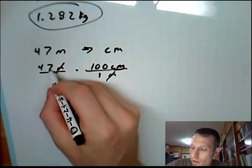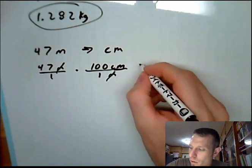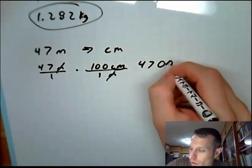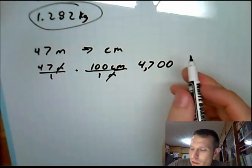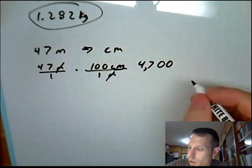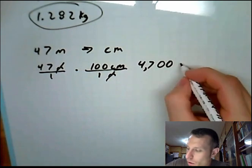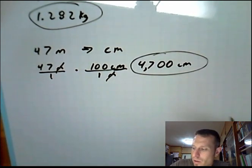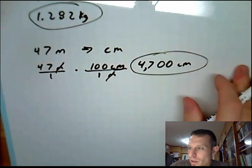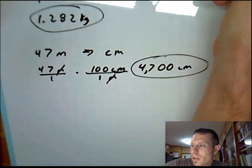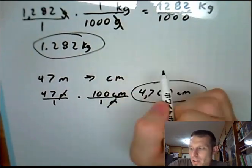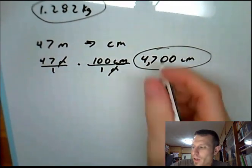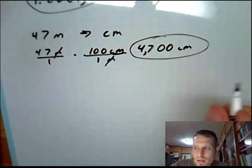And then on the top we have 47 times 100. So 47, we'll move 47 times 100 is 4,700. You move the decimal over two spots. And the only unit is centimeters. So in 47 meters, there are 4,700 centimeters. And the last one, let's see, we've done mass with kilograms. We've done length with centimeters.